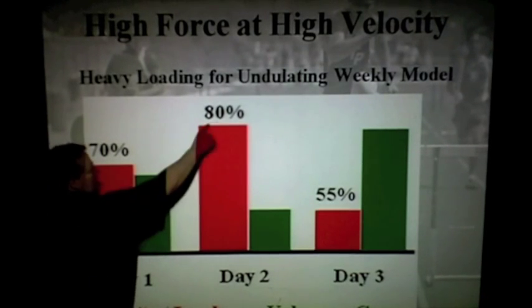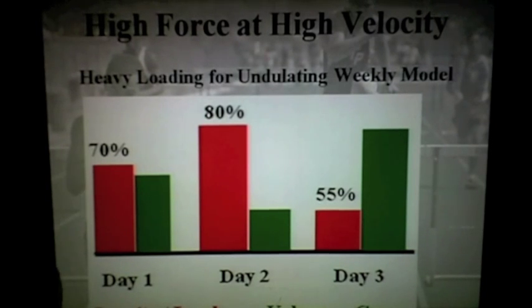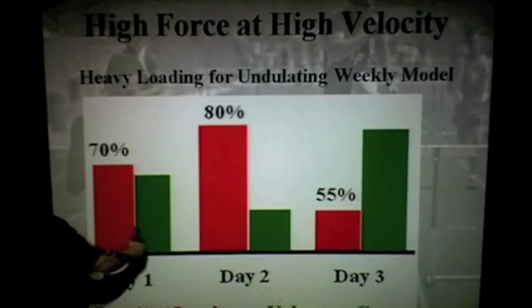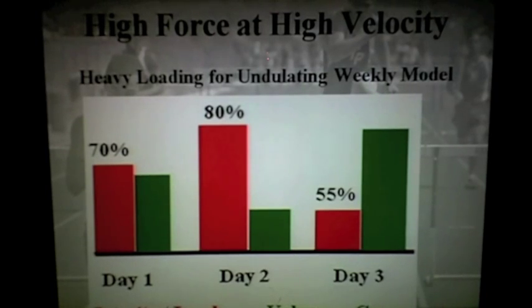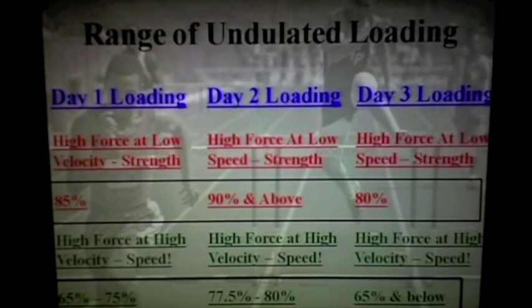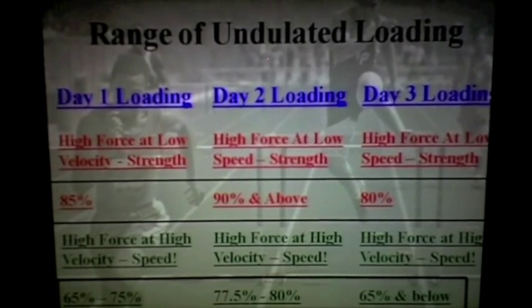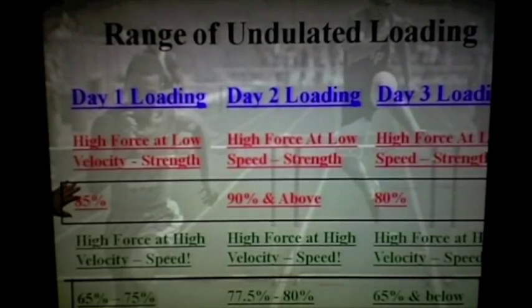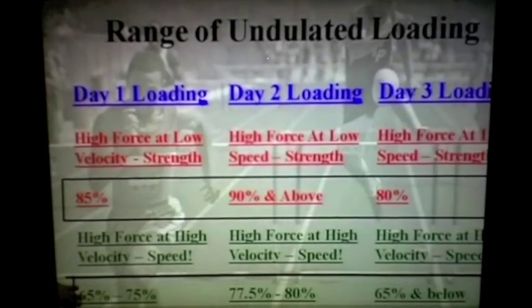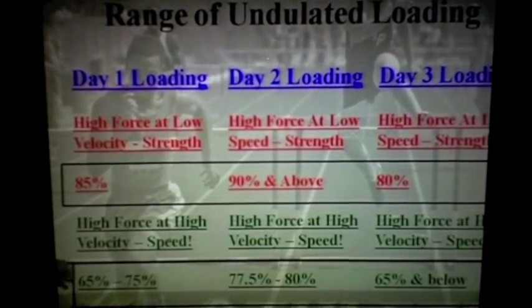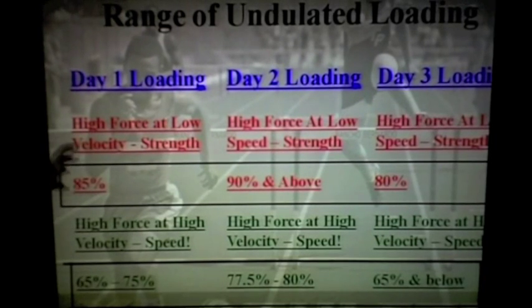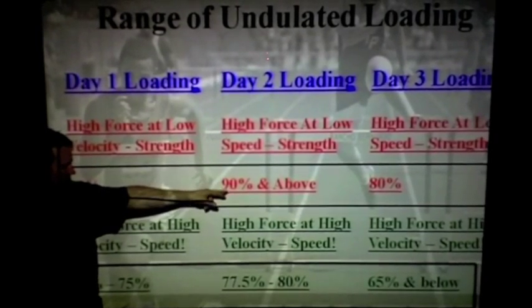These percentages aren't fixed — day two might range 75 to 80, day three from 65 down to 45 or even 35, depending on the method. To review: day one is high force, high velocity — 85 percent, or if below 80, around 65 to 70 percent. I may do doubles for four or five sets, potentially pairing with plyometrics, chains, or bands.